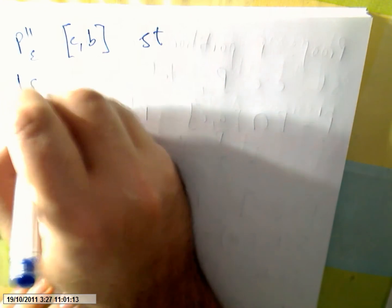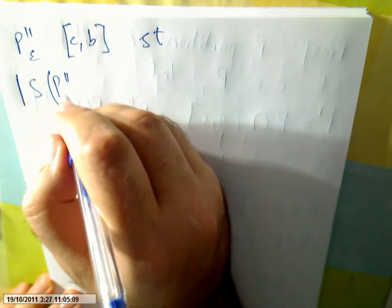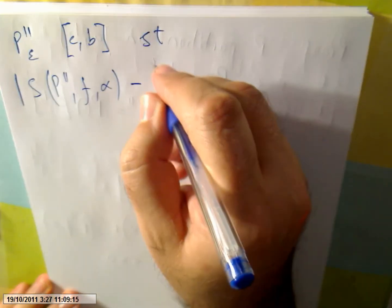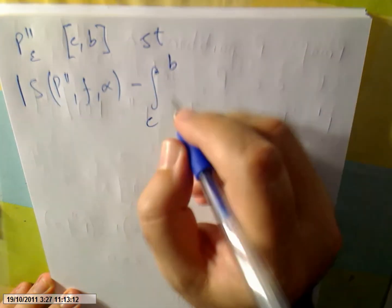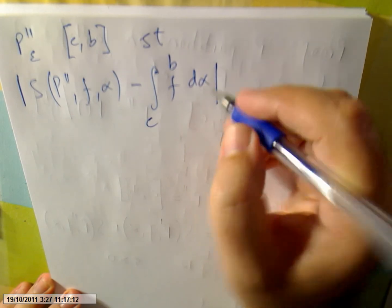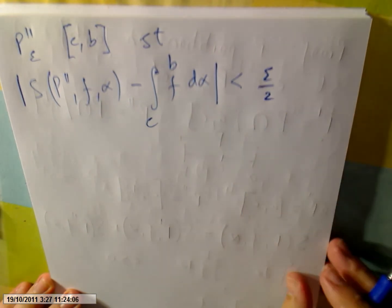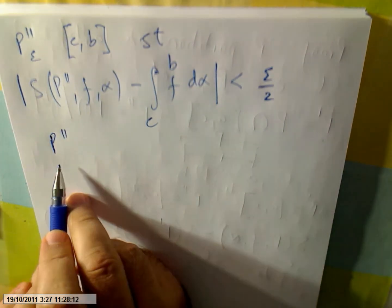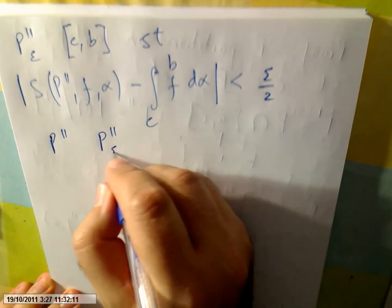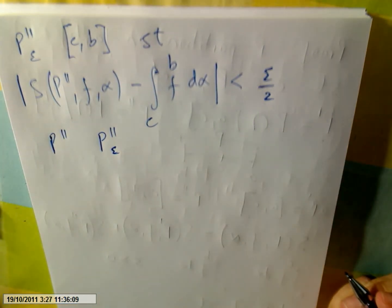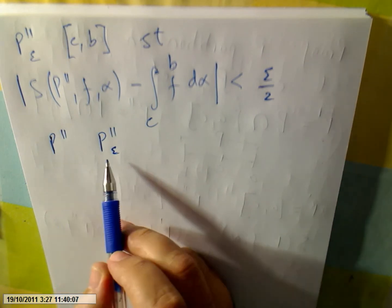And there will also be another partition P″_ε, this time of [c,b], such that the absolute value of S(P″, F) minus the integral from c to b of F dα is smaller than a small positive number — again I'll use ε/2. This holds for P″ finer than P″_ε.